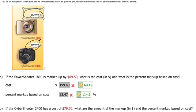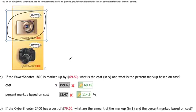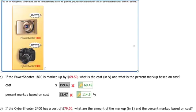So we have two cameras. Here's their sales prices. Part A says this top camera is marked up by $69.50. So what is the cost? What's the percent markup? So they're selling it for $129.99.